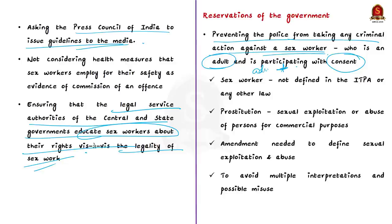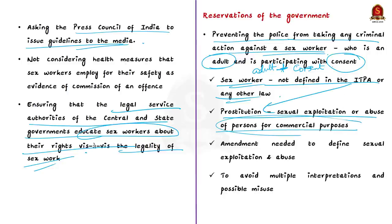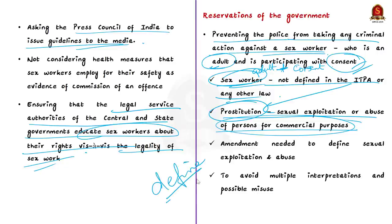There are four other recommendations regarding which the government has certain reservations. One is about preventing police from taking criminal action against a sex worker who is an adult and participating with consent. The concern is that the expression 'sex worker' is not defined in any law, not even in ITPA. ITPA defines prostitution as the sexual exploitation or abuse of persons for commercial purpose. The recommendation is that sex work is not an offense if done voluntarily by an adult — but there is confusion between 'sex work' and 'prostitution' which could be misused by enforcement agencies. The government must define these terms through an amendment.